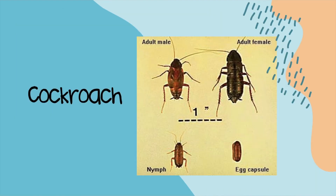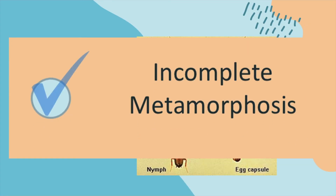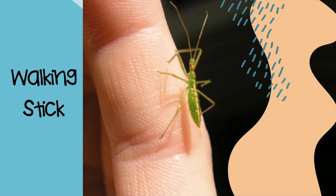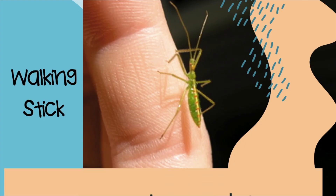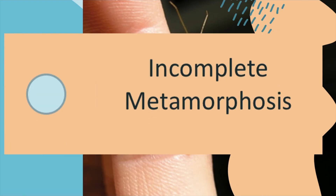What about a cockroach? I see an egg and I see a nymph. Incomplete metamorphosis — correct! Great job. A walking stick — that's a cute little baby walking stick. Complete or incomplete metamorphosis? If you said incomplete metamorphosis, you are correct. This little walking stick goes through the nymph stage.